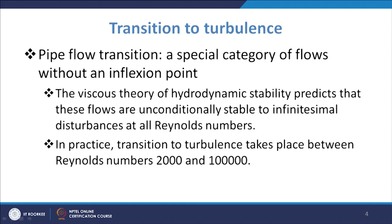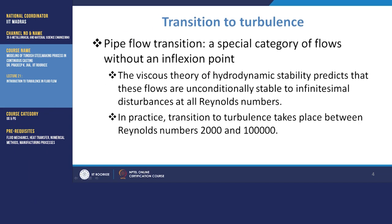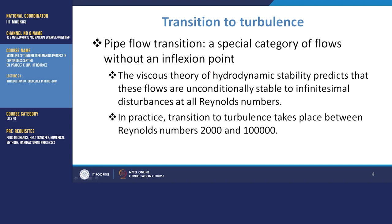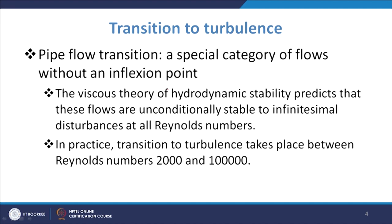You will have the transition to turbulence, and for different kinds of flows there will be a Reynolds number at which transition takes place. In the case of pipe flow transition, there is the category of flow without inflection point. The viscous theory of hydrodynamic stability predicts that these flows are unconditionally stable to infinitesimal disturbances at all Reynolds numbers in pipe flow. For pipe flow, the transition to turbulence takes place between Reynolds number 2000 and 100,000.